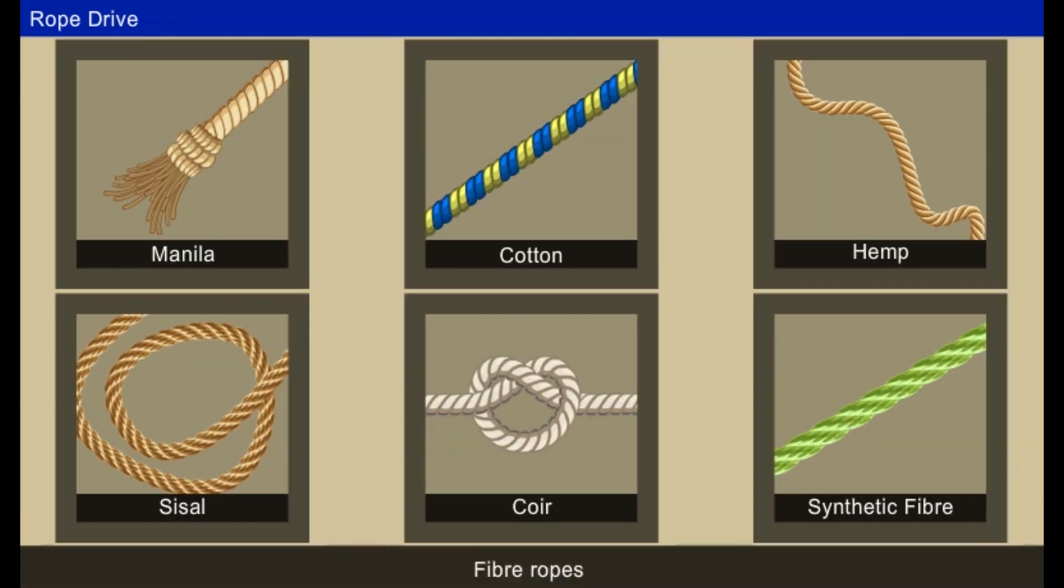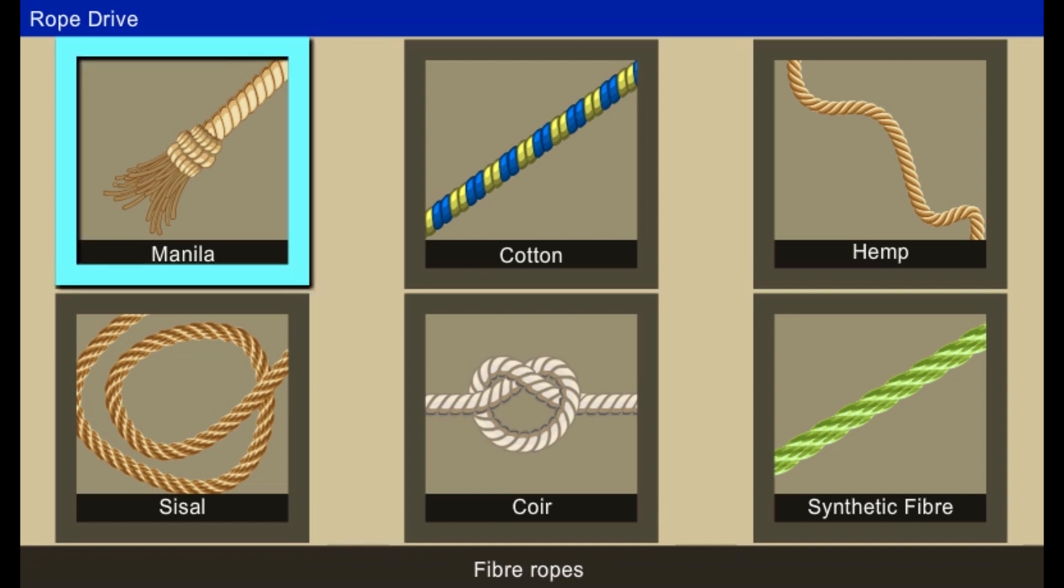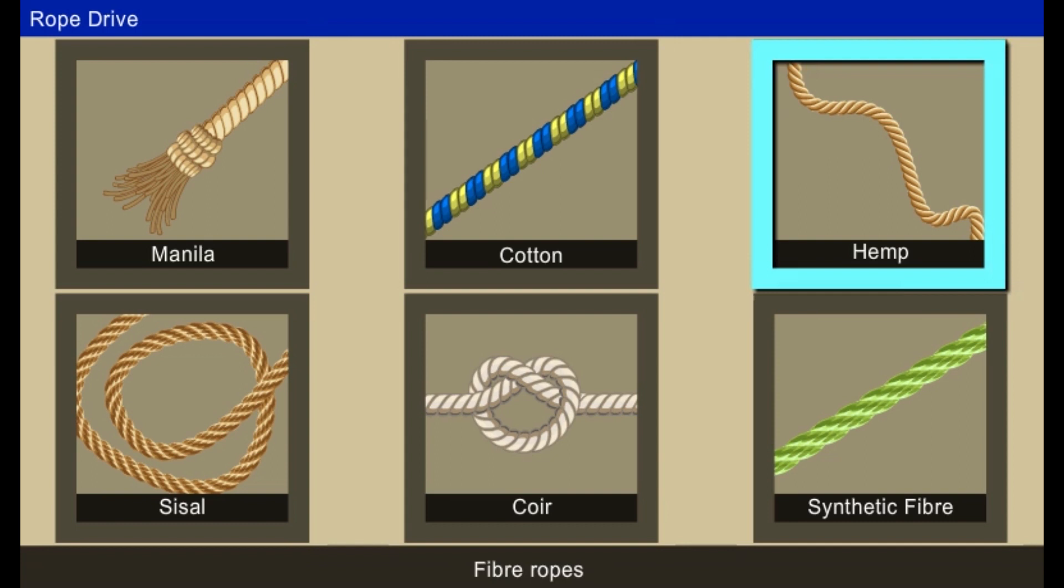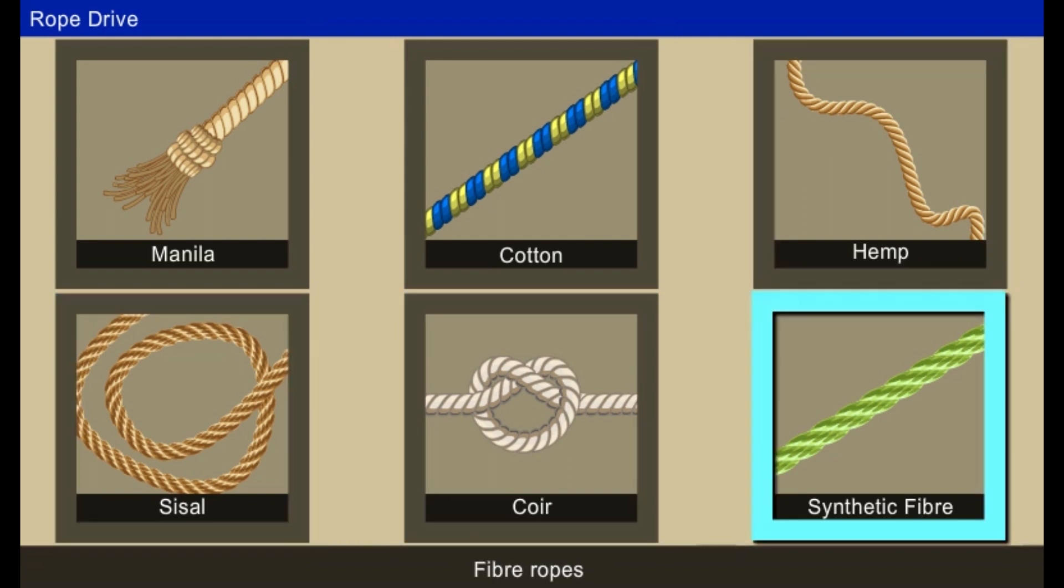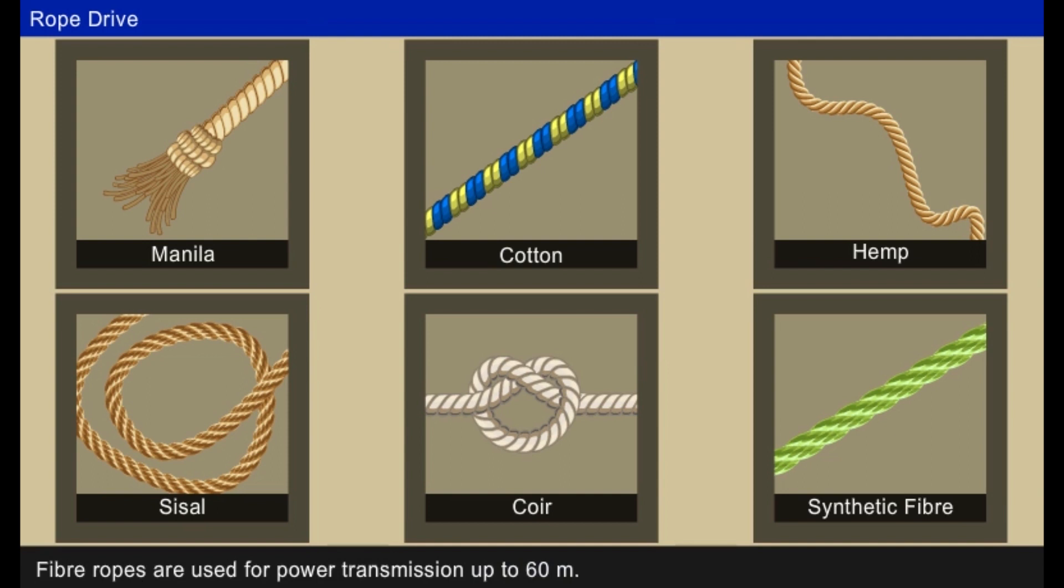Fiber rope is made up of fiber material such as manila, cotton, hemp, sisal, coir, or synthetic fiber. These fiber ropes are used for power transmissions up to 60 meters.